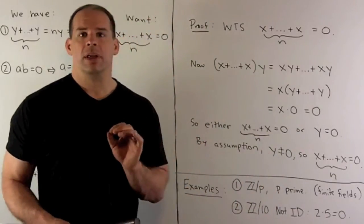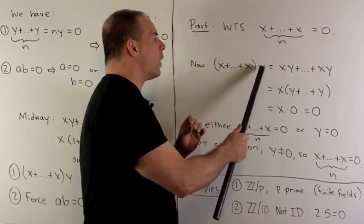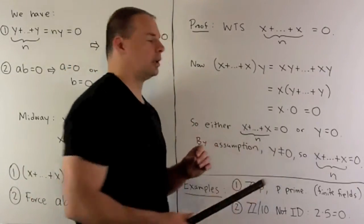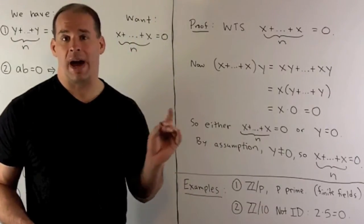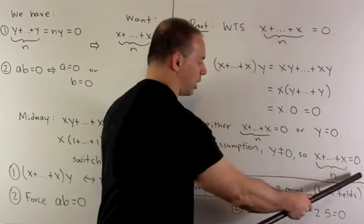And so, since we have no zero divisors, either the sum is zero or y is zero. By assumption, y is non-zero. So that forces my sum to be zero. And that's our result.